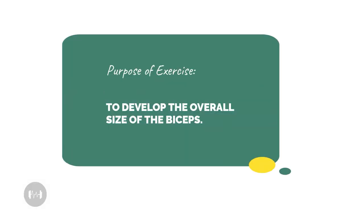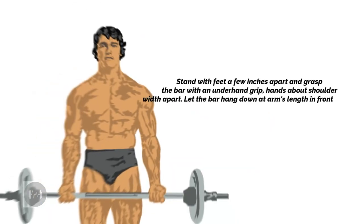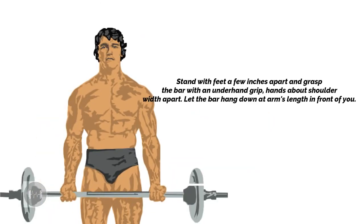This is the most basic and popular of biceps exercises. First, stand with feet a few inches apart and grasp the bar with an underhand grip, hands about shoulder width apart. Let the bar hang down at arm's length in front of you.